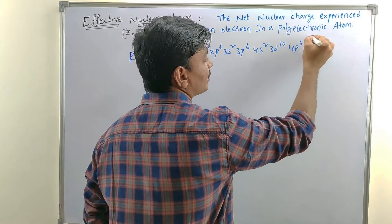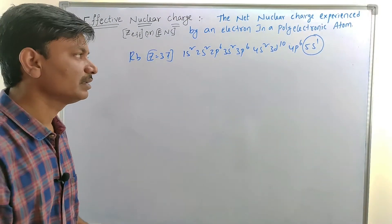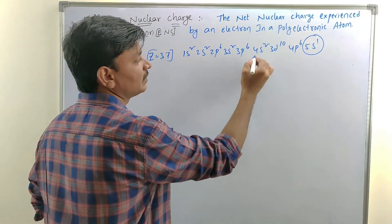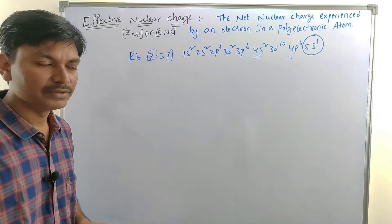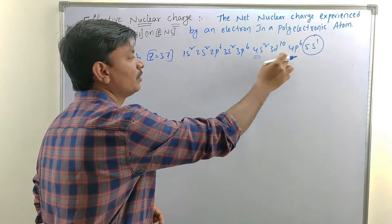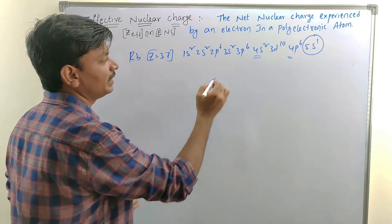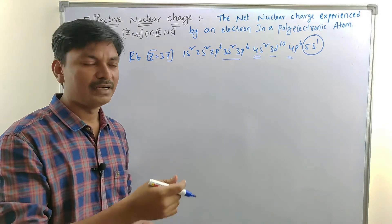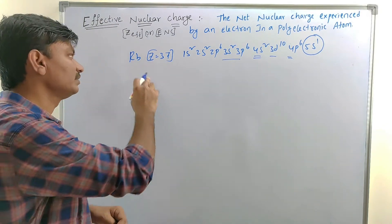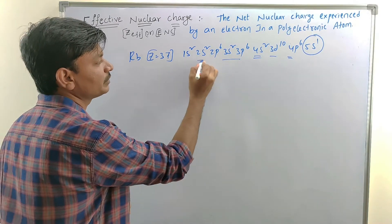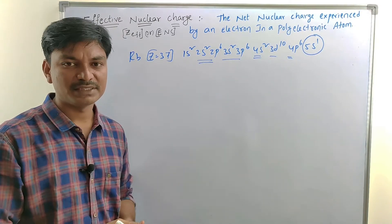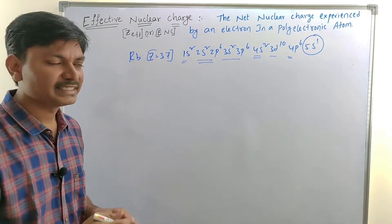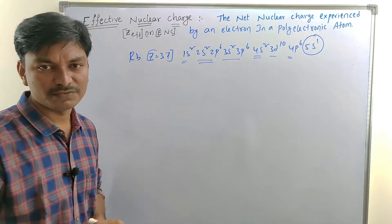Here 5s1 means the S subshell has 1 electron present in the 5th shell of rubidium. 4s2 and 4p6 — both S and P subshells are present in the 4th shell. 3s2, 3p6, and 3d10 — S, P, and D subshells are present in the 3rd shell. 2s2 and 2p6 — S and P subshells are present in the 2nd shell. And 1s2 — S subshell with 2 electrons is present in the 1st shell.